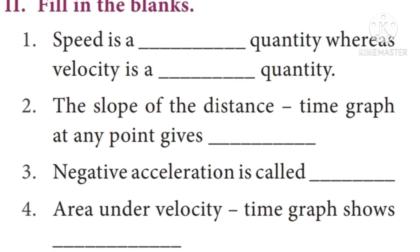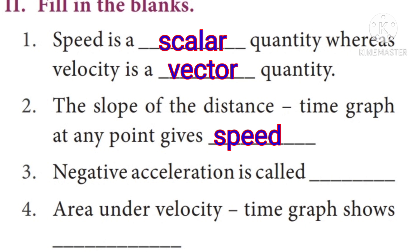Next, fill in the blanks. Question 1: Speed is a blank quantity whereas velocity is a blank quantity. Answer: Speed is a scalar quantity, velocity is a vector quantity. Question 2: The slope of the distance-time graph at any point gives — answer: speed. Question 3: Negative acceleration is called — answer: retardation. Question 4: Area under velocity-time graph shows — answer: displacement.